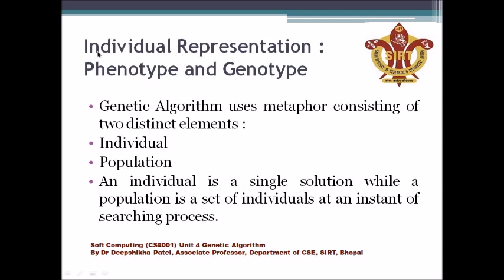Next, individual representation — phenotype and genotype. A genetic algorithm uses a metaphor consisting of two distinct elements: individual and population. An individual denotes a single solution. An individual represents a chromosome, and the chromosome is your solution. An individual represents a single possible solution.